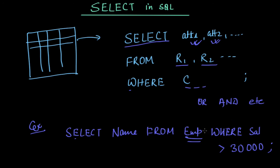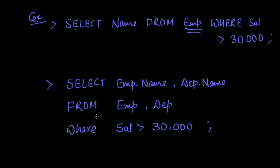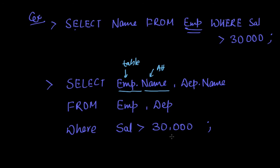Now let's see how this query works when we have multiple tables. In this query we are selecting the employee name and department of the employee. So employee.name means the name attribute from the employee table, and this is the name attribute from the department table — FROM employee, department WHERE salary is greater than 30,000. So it will select the employee name and department name for employees whose salary is greater than 30,000.